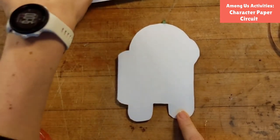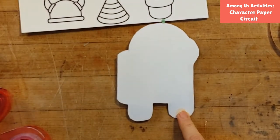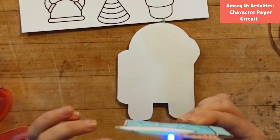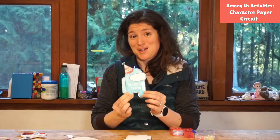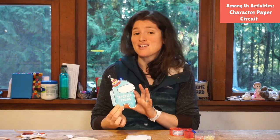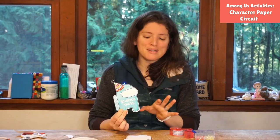And then the last thing to do would be to like choose a hat or maybe make your own hat sort of decoration. Color it all up. And you can make a fun little Among Us paper circuit project. So that is a great activity that you can do over the weekend. Hopefully you find it pretty simple to do.